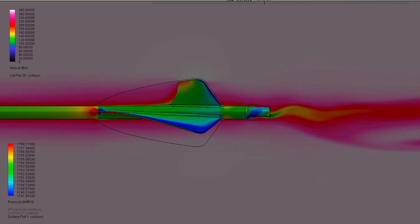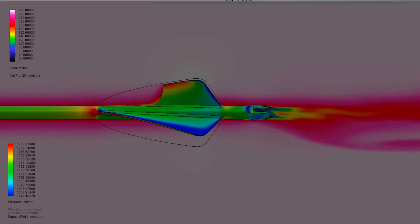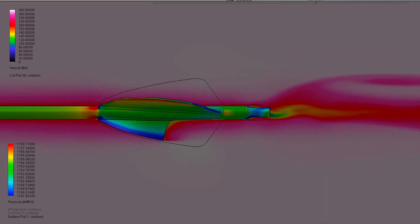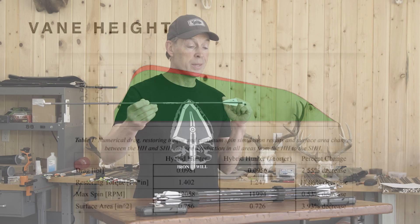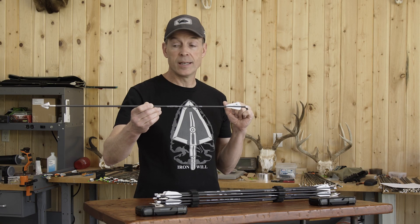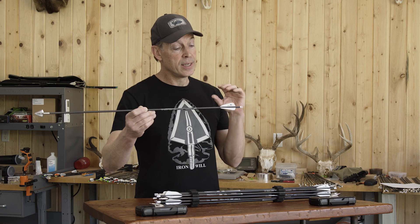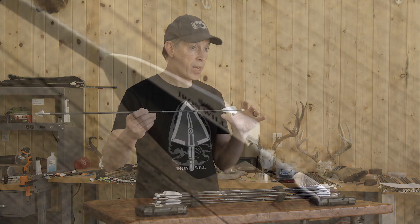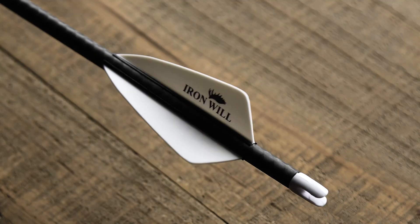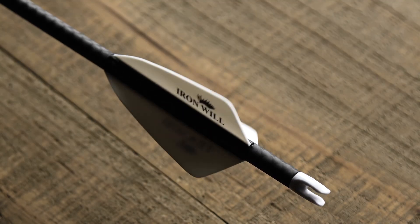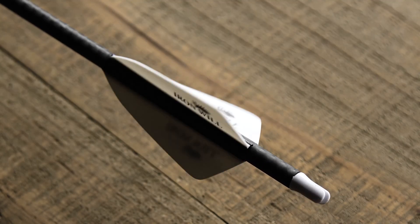In general, shorter, smaller vanes will have less drag, but there's a trade-off with accuracy and stability. Our university studies have shown that by reducing vane height by 10 percent, you can reduce drag by two and a half percent, but you reduce stability by eleven percent. So I still think it's a better idea when shooting broadheads to use a taller vane — 0.5 inches high or higher — for good accuracy and stability.